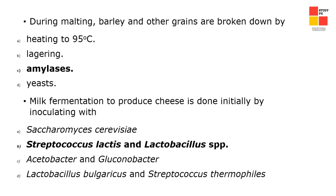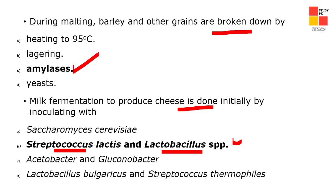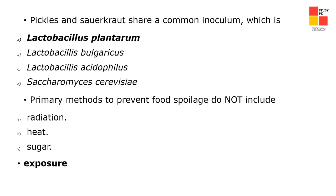During malting, barley and other grains are broken down by amylase enzyme — that is the right option. Milk fermentation to produce cheese is done initially by inoculating with Streptococcus lactis and Lactobacillus species. Pickles and sauerkraut share a common inoculum, which is Lactobacillus plantarum — option A is the right answer.